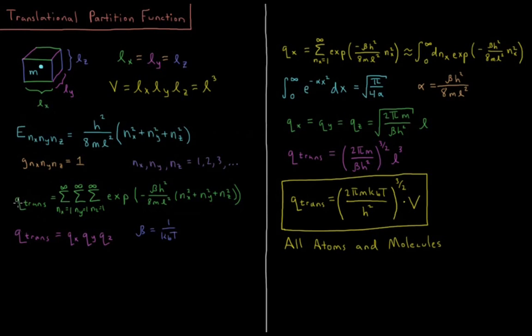If we want to get our translational partition function, we sum over all the states of their Boltzmann factors times their degeneracies. The degeneracy is 1, so that's convenient. The translational partition function is going to be a sum over all three quantum numbers from nx equals 1 to infinity, ny equals 1 to infinity, and nz equals 1 to infinity of the Boltzmann factor, e to the minus beta times h squared over 8ml squared times nx squared plus ny squared plus nz squared.